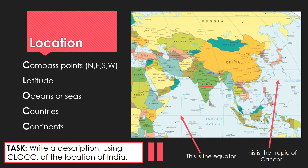Here we come to the location of India. It was mentioned in the video, so hopefully you picked up some of what the narrator said. What I want you to get into the habit of using is the clock idea that I introduced last week — including these five factors when describing a particular place in terms of its location. I've labelled the equator and the Tropic of Cancer on this map, with pinky arrows pointing to them — these are examples of lines of latitude. India is the green country in the middle of the map, underlined in pink. Have a go at your description, then I'll give you a few pointers.